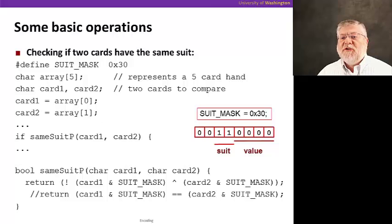So let's take a look at how we would implement these operations if we were doing it in C. If we wanted to check if two cards are of the same suit, what we would do is have two bytes representing each card.